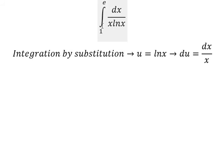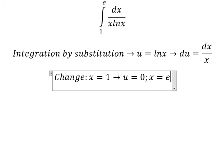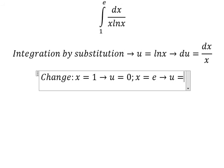Next, we need to change the boundary. If x equals 1, so U should be 0. If x equals e, so U should be 1.